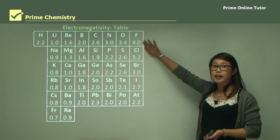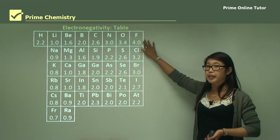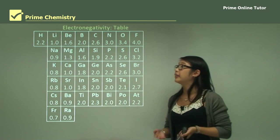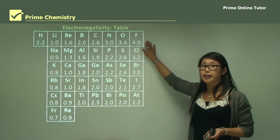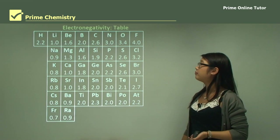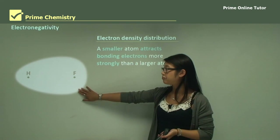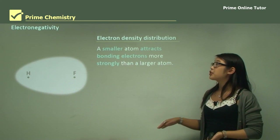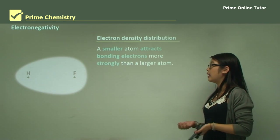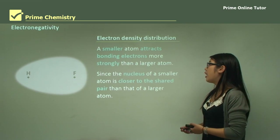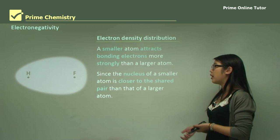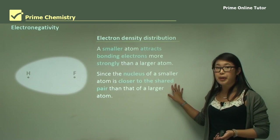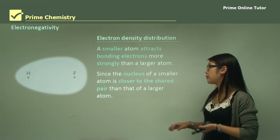Fluorine on the electronegativity table has a value of 4, so it's very electronegative. Francium has a value of 0.7, so it's not very electronegative — the higher the number, the more electronegative it's going to be. An electron density distribution shows us where the electrons are going to be sitting in relation to the atoms. For a smaller atom, it attracts bonding electrons more strongly than a larger atom, because the positively charged nucleus of a smaller atom is going to be closer to the electrons in the valence shells, and therefore able to pull them in more tightly.